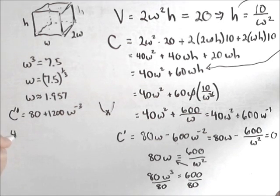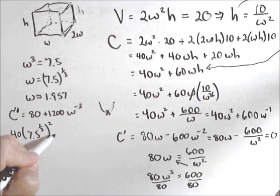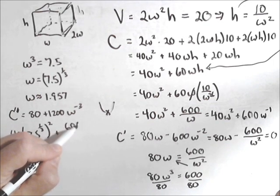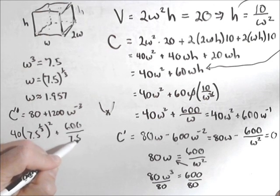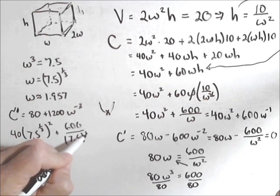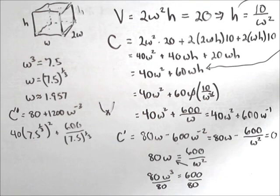So we have 40 times... Actually, if we want, we can use the 7.5 to the 1 third to make it a little more accurate. Squared plus 600 over 7.5 to the 1 third. So putting that all into our calculator, let's see what we're going to get.